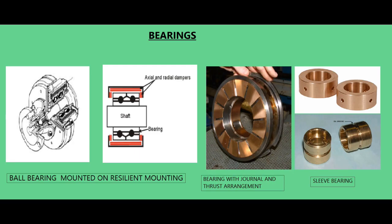There are sleeve type, ball or roller type, and thrust bearings used in turbochargers. Sleeve type bearings are generally mounted at the centre of the shaft and are lubricated by a separate external lubricating system. Ball or roller bearings are normally located at the end of the shaft; they are fitted in resilient mountings incorporating spring damping to prevent damage due to vibration, and these bearings have their own integral oil pumps and oil supply.